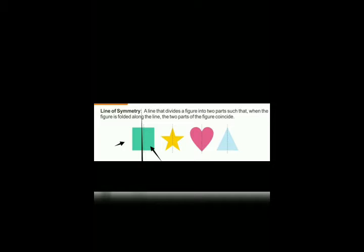In this figure, whenever we take a vertical symmetry line, the figure is divided into two parts and both parts become the same. So line of symmetry means whenever we divide the figure into two parts, both parts coincide — both parts become the same. In this figure both parts become the same because we drew a line of symmetry, and in this triangle we draw a symmetrical line and both parts become the same.